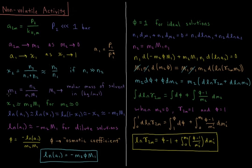Molality is the number of moles of solute divided by the kilograms of solvent. The molar mass of the solvent M₁ gives kilograms of solvent per mole of solvent, so multiplying by N₁ gives total kilograms of solvent. This means molality equals N₂ divided by (N₁ × M₁). Therefore, for a dilute solution, the mol fraction of our solute χ₂ is approximately equal to its molality times the molar mass of the solvent in kilograms per mole.